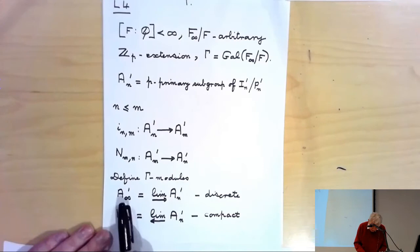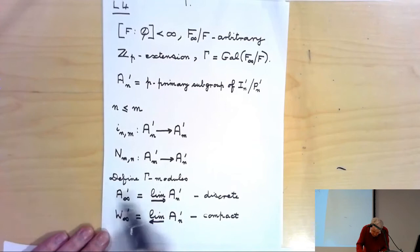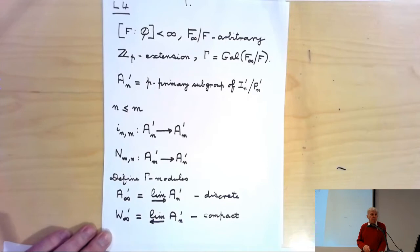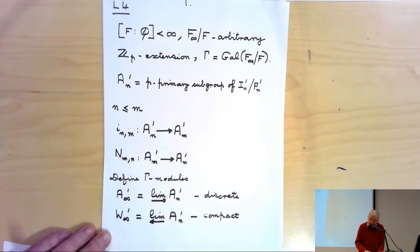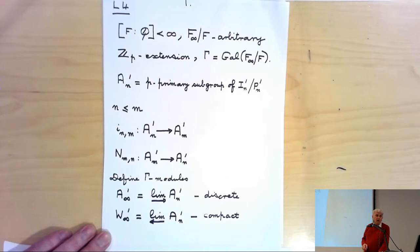With the maps InM, you can take the inductive limit of the An' primes, and this gives you the module A∞' prime, which is a discrete γ-module. And then the other way, with the norm maps, we can take the projective limit with respect to the norm maps, and that way I will get a compact γ-module, which I will call W∞'.